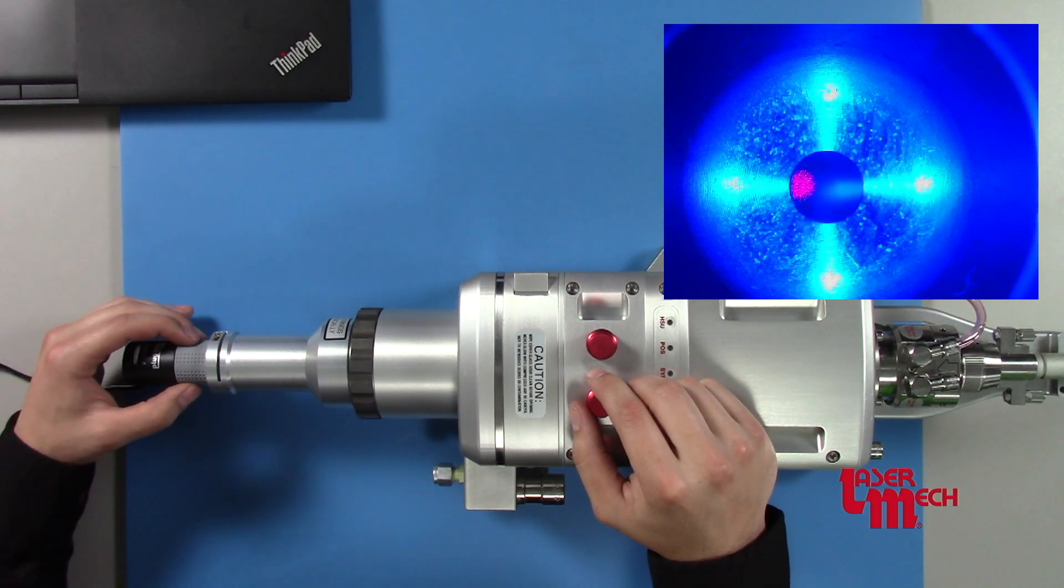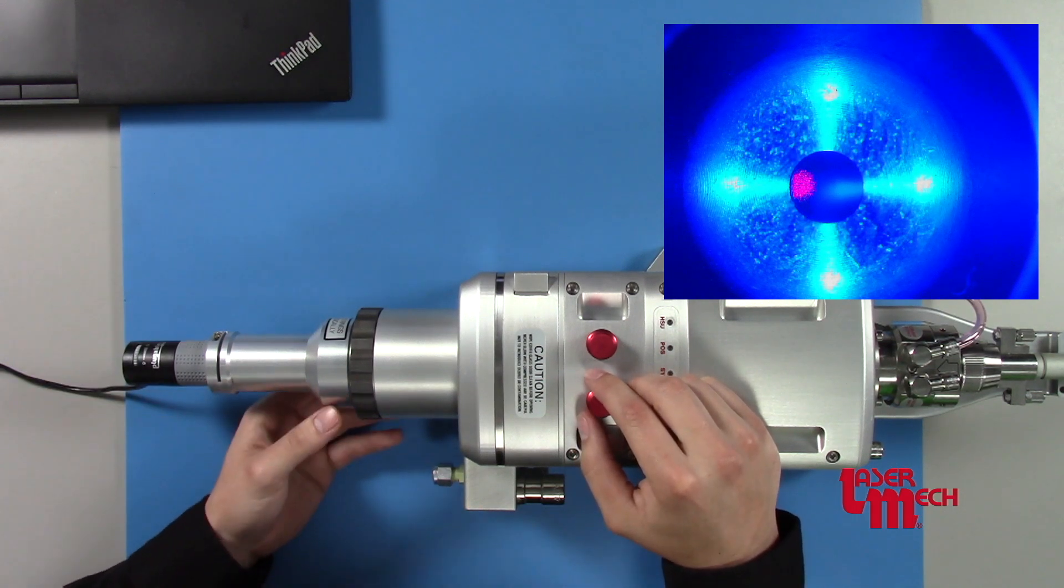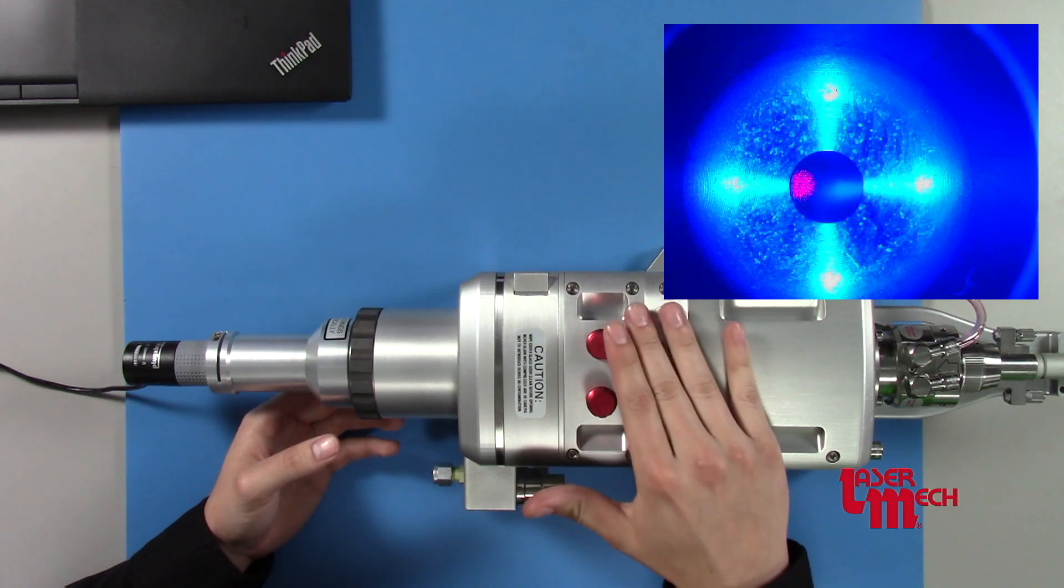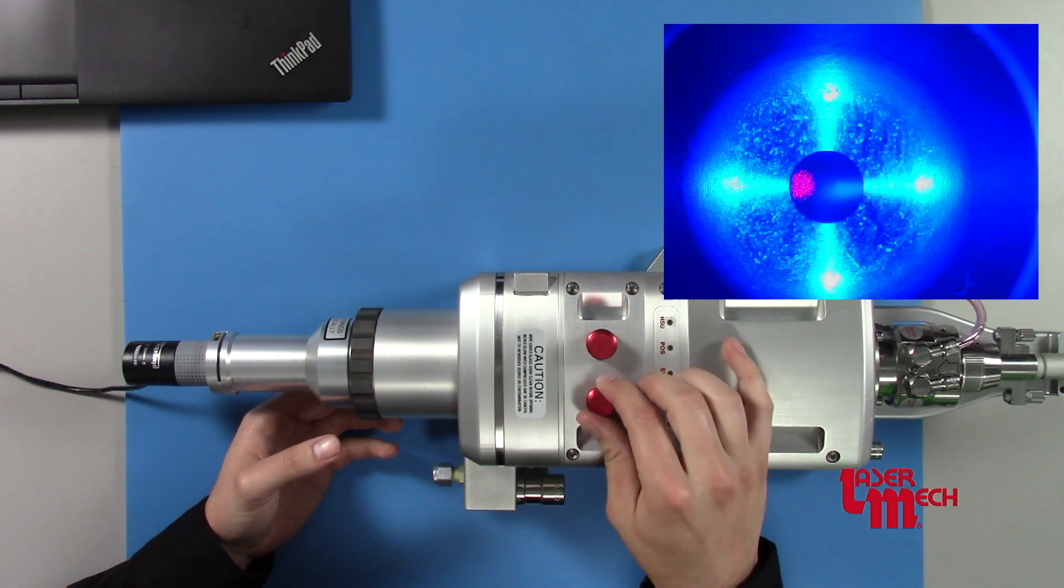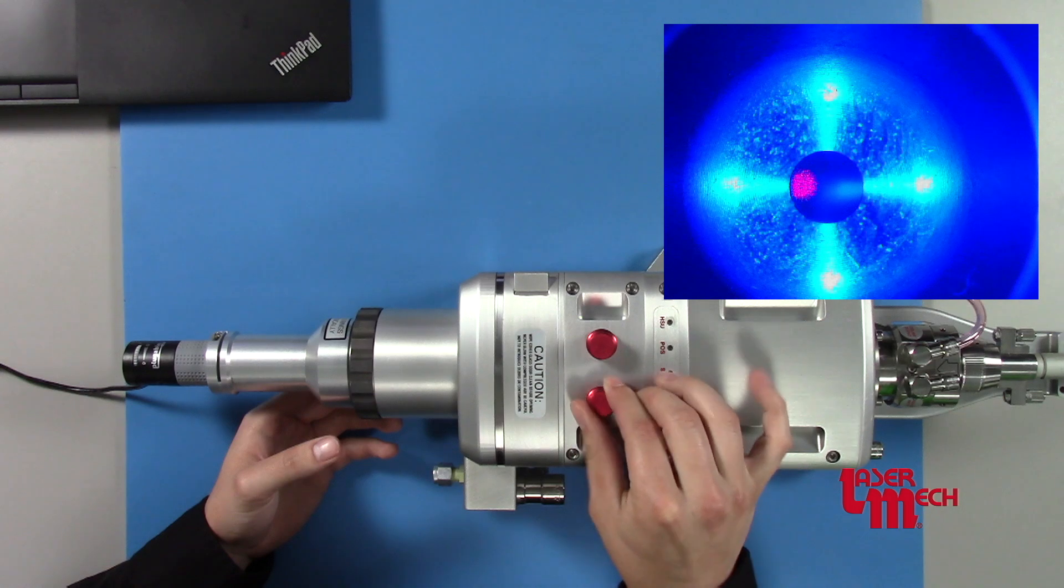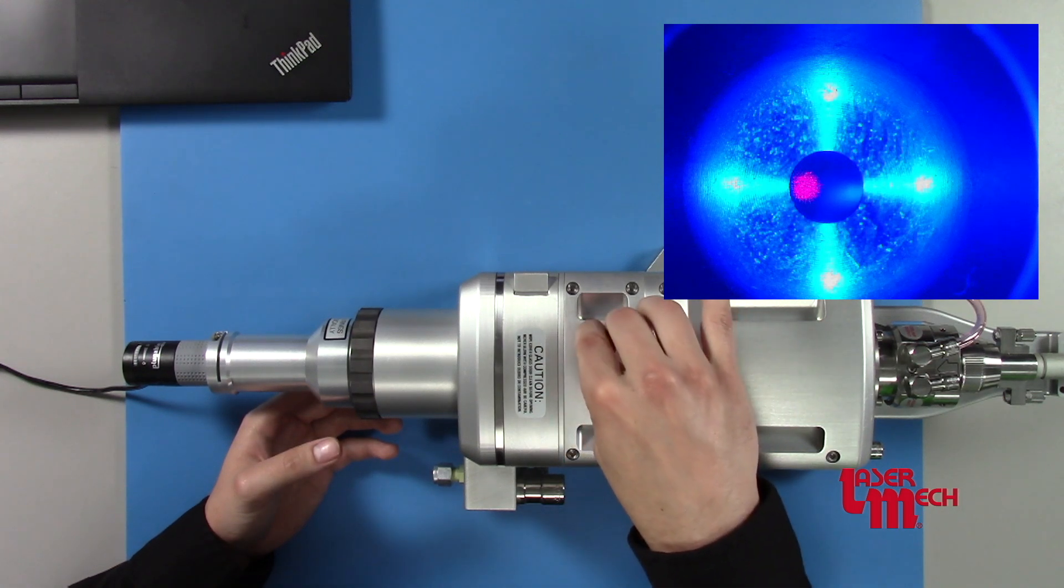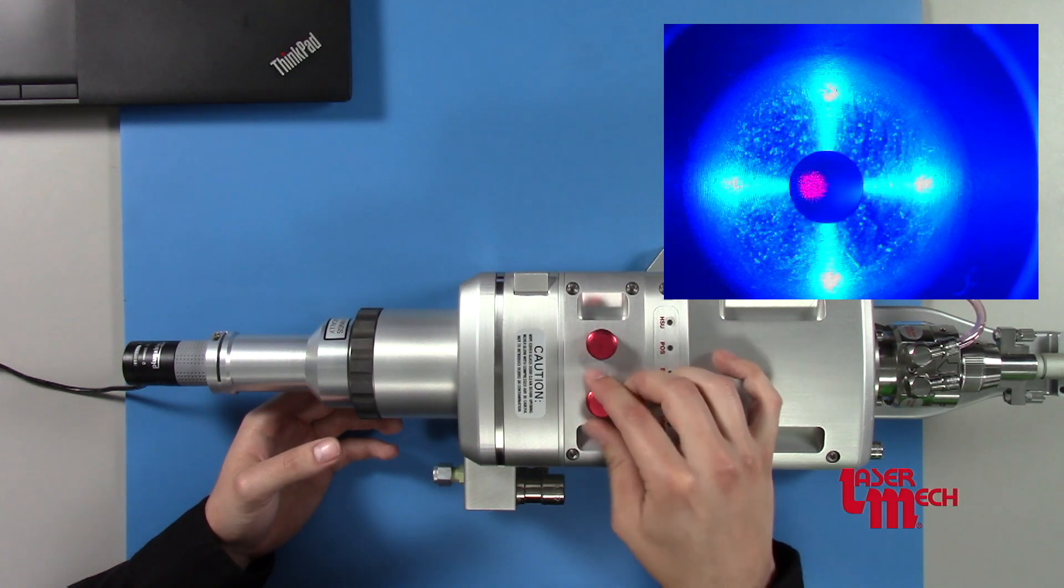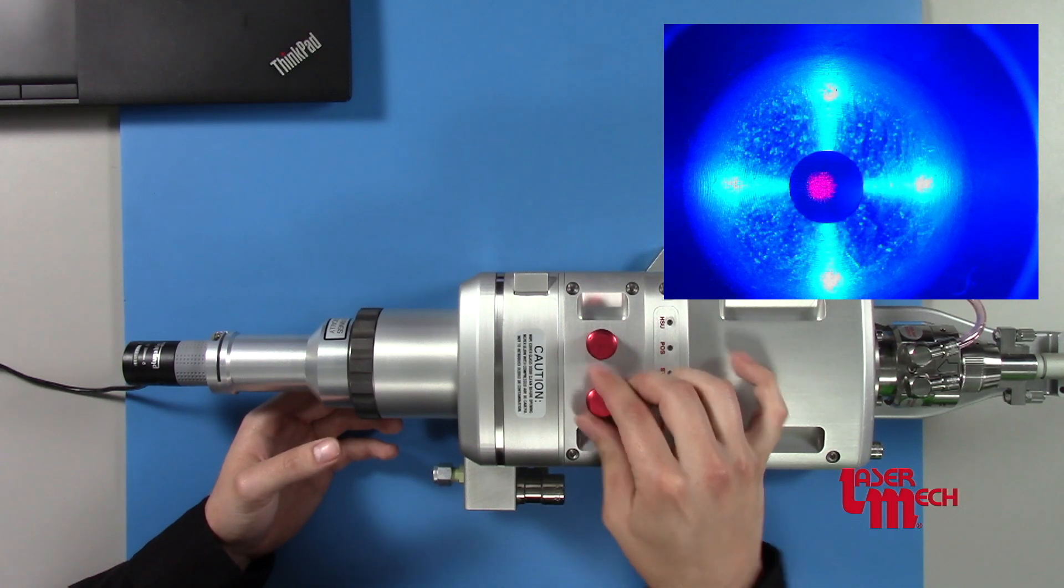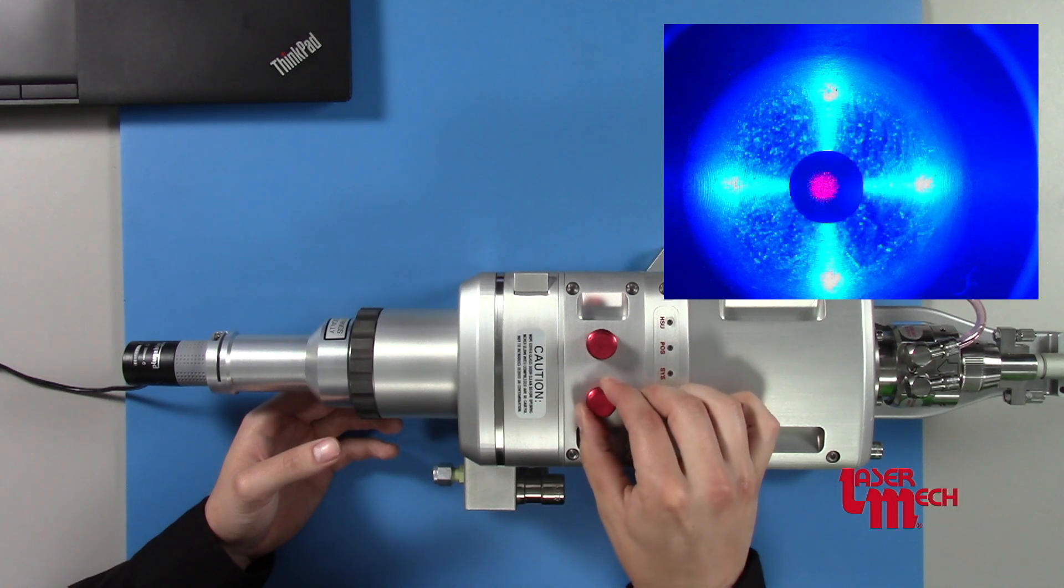So once you're there and you can see everything properly, come over to your two red knobs on the head here. You can just adjust and see which way you're going to need to go—up and down, left and right. So as we can see, we're bringing this over to the center here. Some slight adjustments.